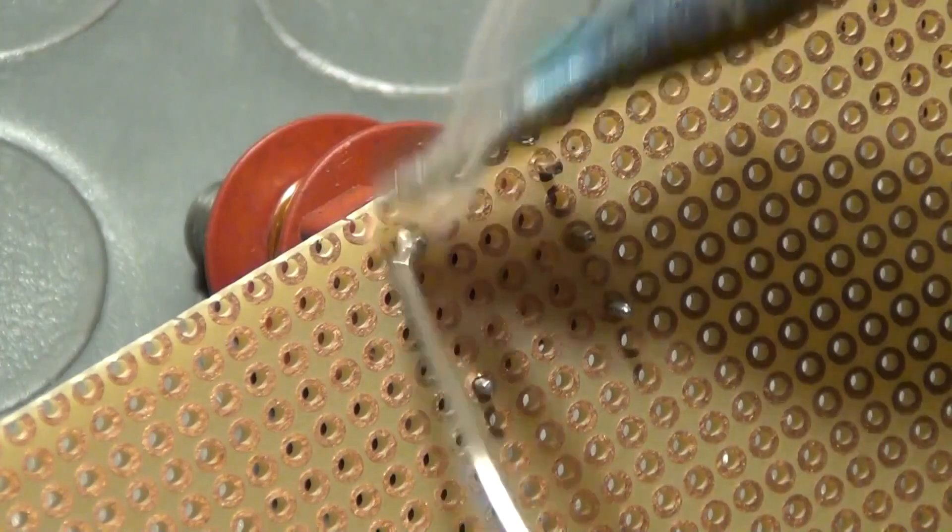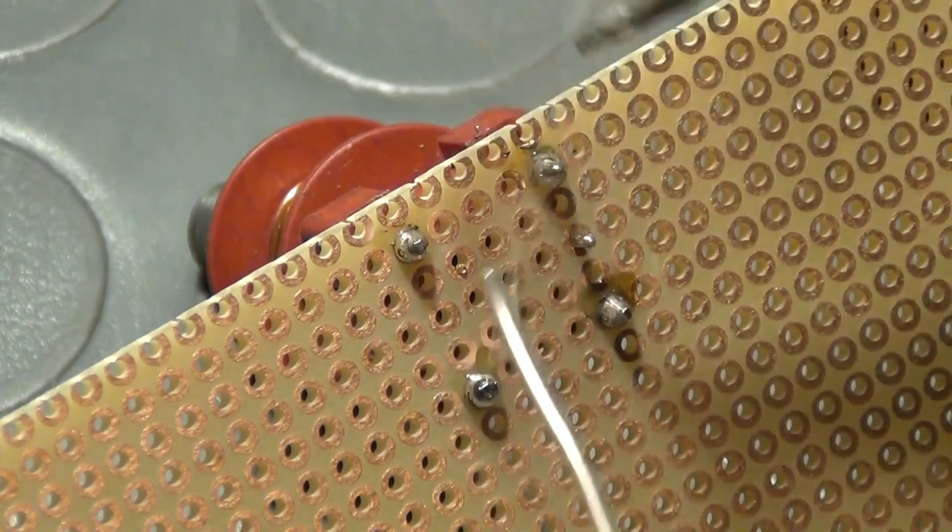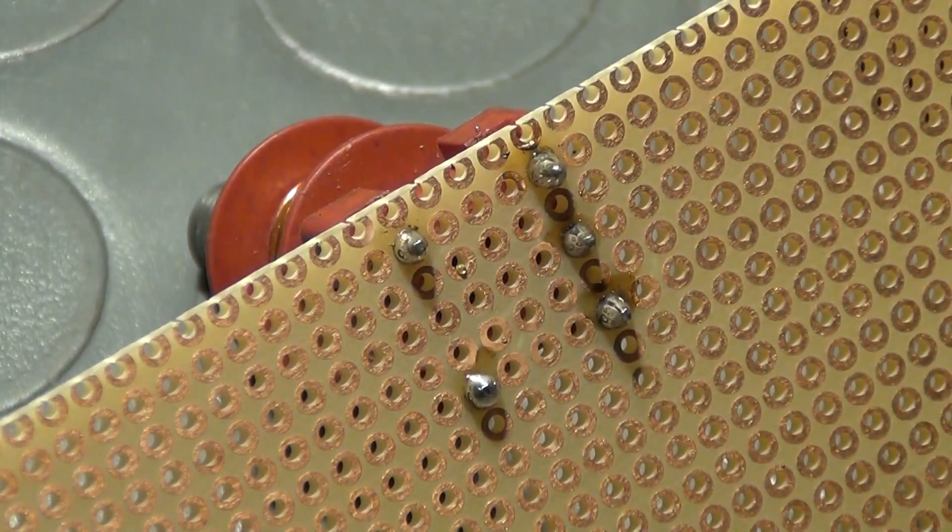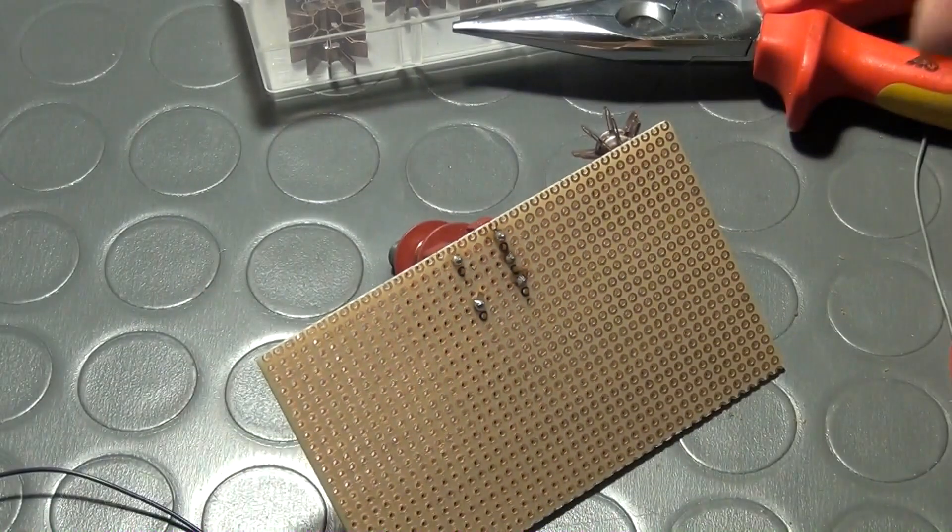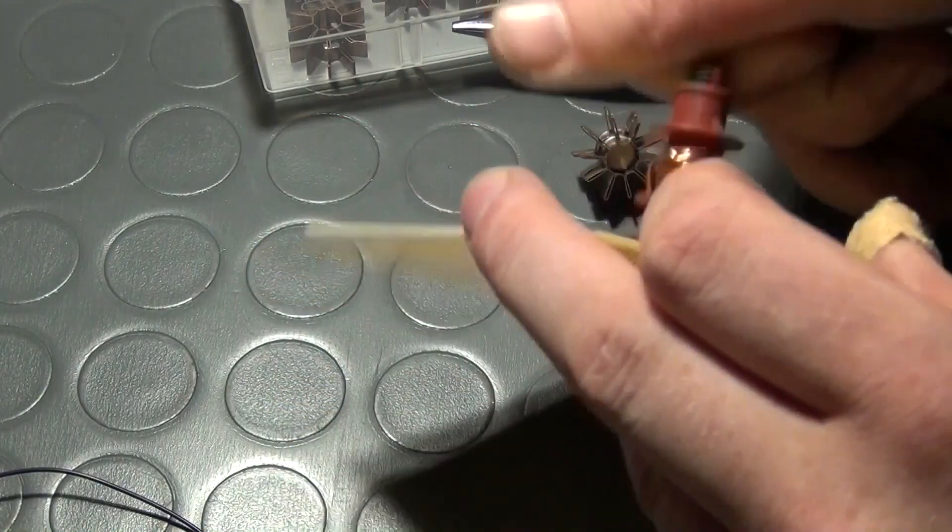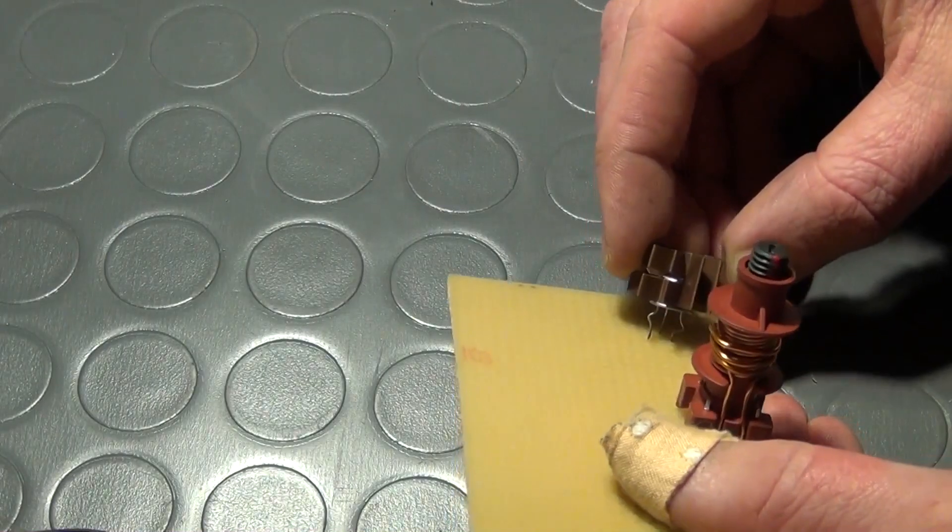Now a piece of vario board that will carry the parts of the RF section is needed. Its necessary size will vary depending on the particular casing you're going to use. This one measures 10 cm by 6 cm. When working with vario board, it's recommended to solder the biggest components on the board first and then arrange the smaller parts as you go.